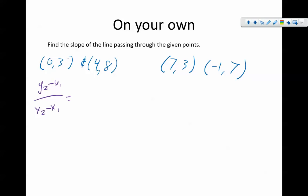So we're going to take the difference in Y divided by the difference in X, telling us 8 minus 3 divided by 4 minus 0, which is going to give us 5 over 4. So 5 fourths is my slope for that first one.